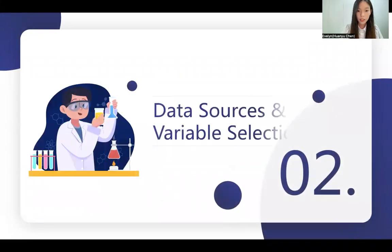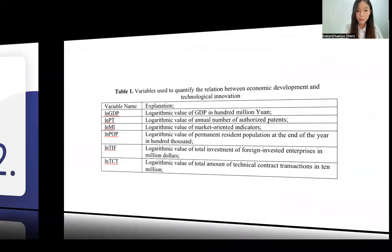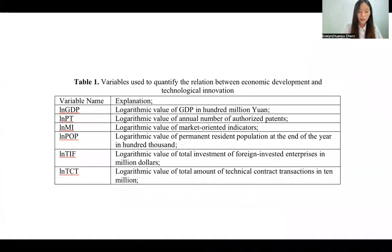The next part is data sources and variable selection. The research period spans from 2011 to 2020 and includes 13 provinces and autonomous areas in China. I choose the GDP of different regions of China to represent the economic growth and set it as the dependent variable.